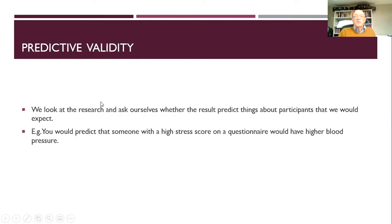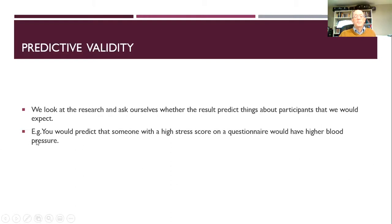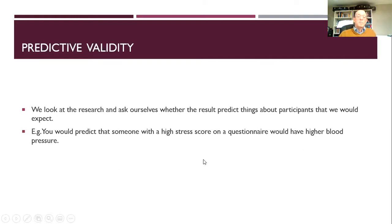Predictive validity helps us find out whether the research findings would predict things about participants that we'd expect. If someone scored highly on a stress questionnaire, you could predict they might have higher blood pressure than someone with a low score. That shows our research is useful because it can tell us something about the future — and if we knew someone was highly stressed, we could do something about it to help with their blood pressure and physiological responses.